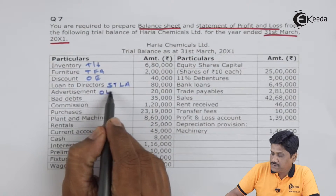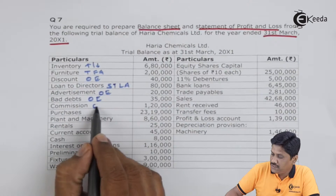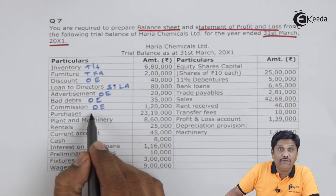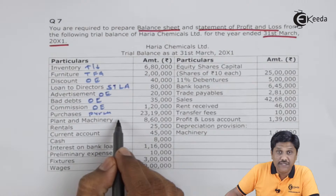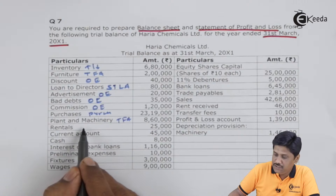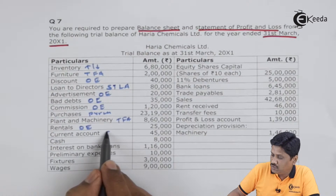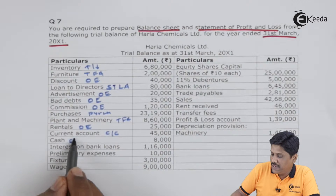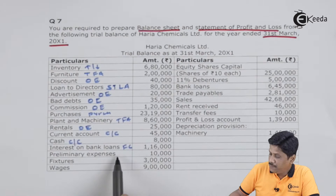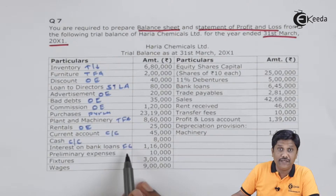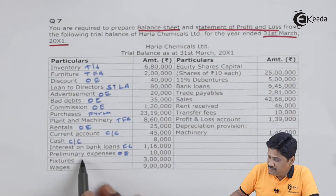Advertisement is your other expense. Bad debts is your other expense. Commission is your other expense. Purchases will come as purchases only. Plant and machinery is your tangible fixed asset. Rental is your other expense. Current account is a bank balance — basically cash and cash equivalent. Cash will come in cash and cash equivalent. Interest on bank loan is your finance cost.